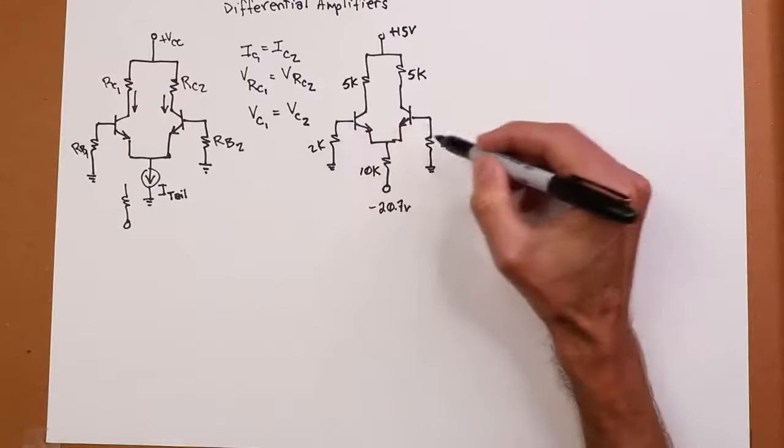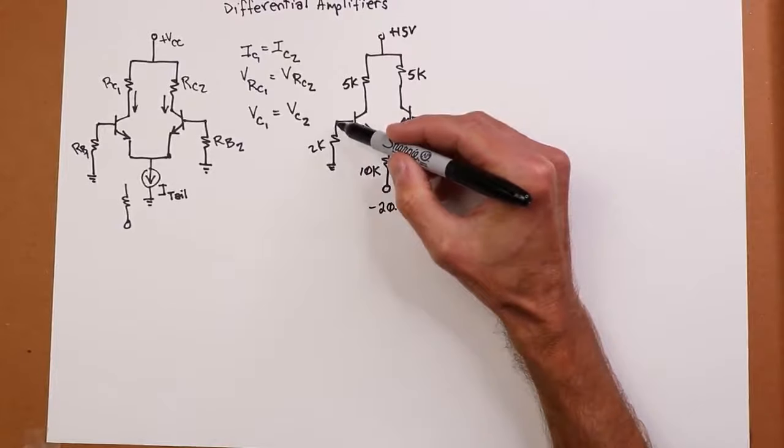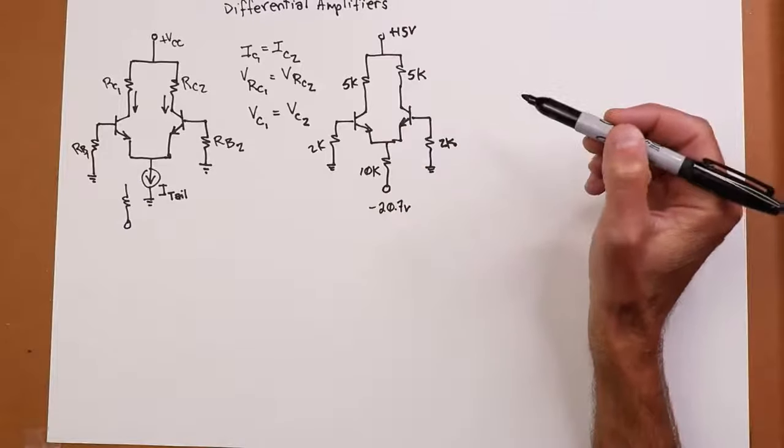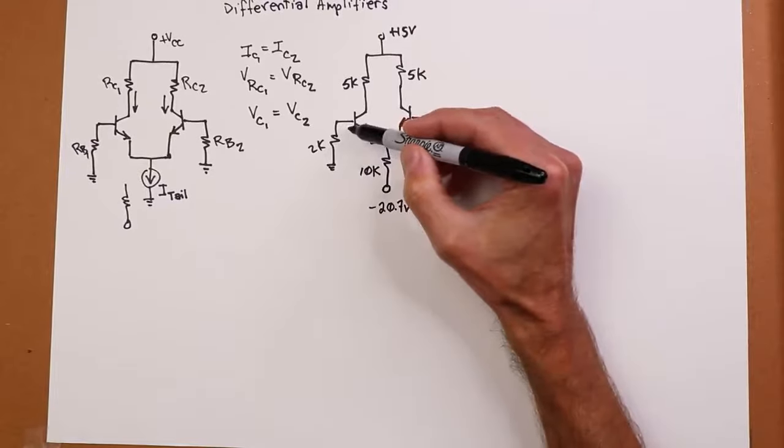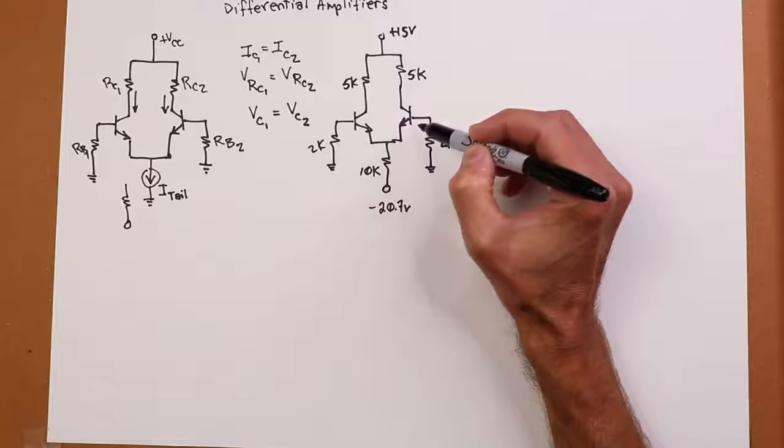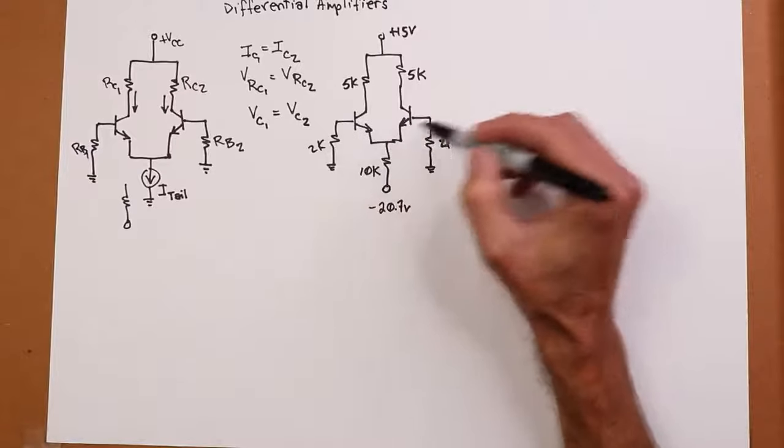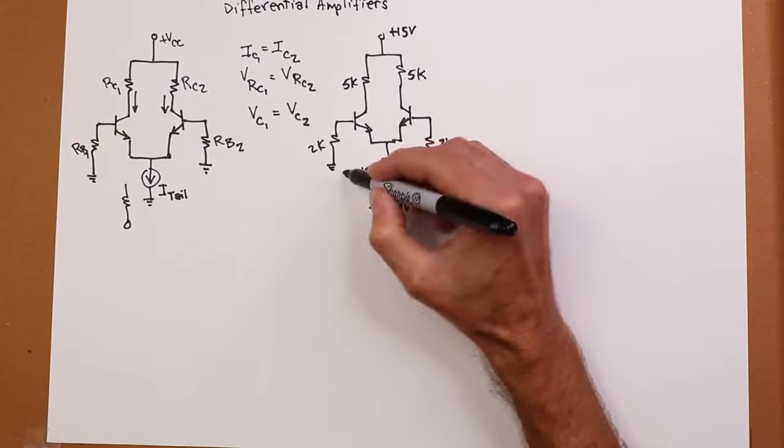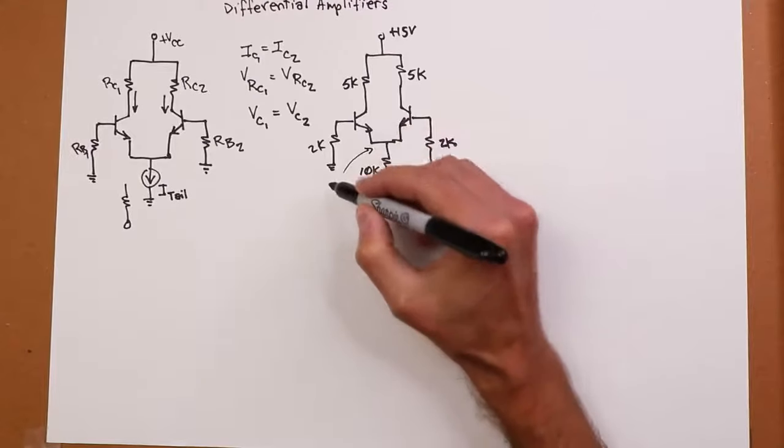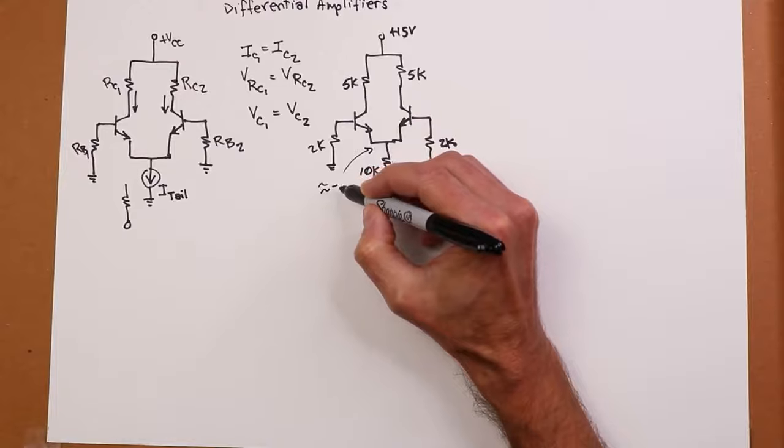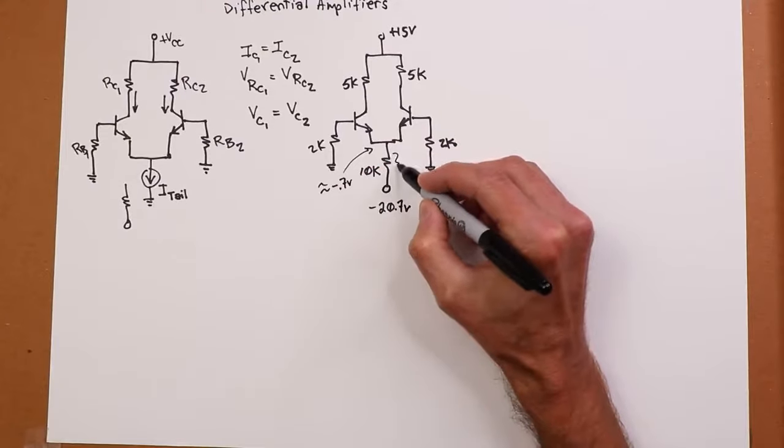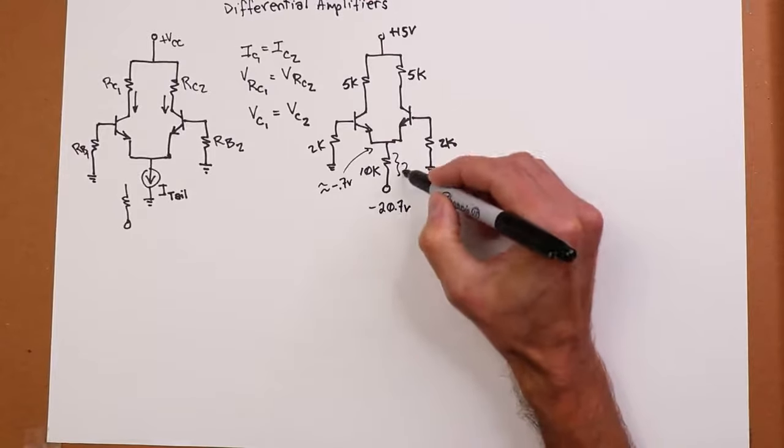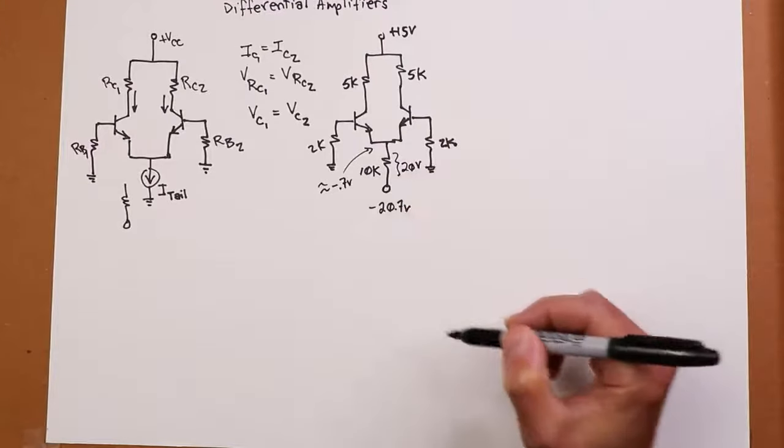So here's the way this should work out. The drops across the 2K should be small enough to ignore. We'll have very small negative DC voltages on our bases. Small enough to ignore. We'll have our 7 tenths of a volt drop on each base emitter, but they're basically in parallel in this configuration. So this point right here, where the two emitters meet, will be around negative 0.7 volts. Which means, from negative 20.7 on the other side, you're going to have about 20 volts dropping across that 10K.